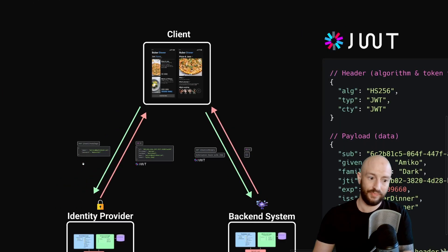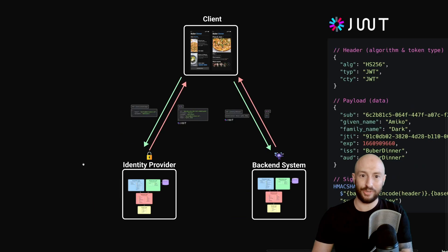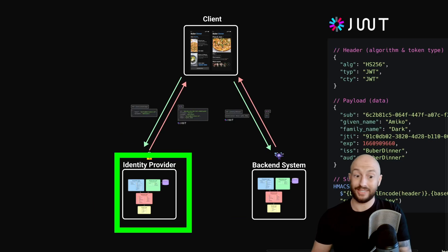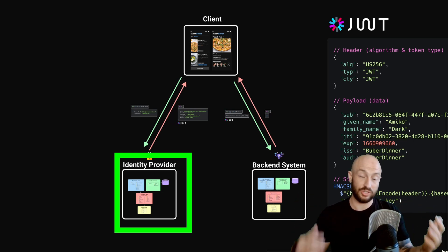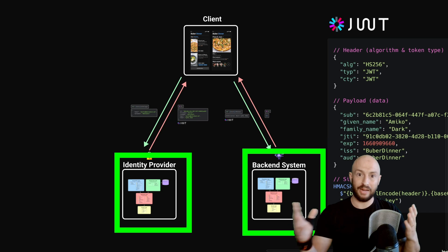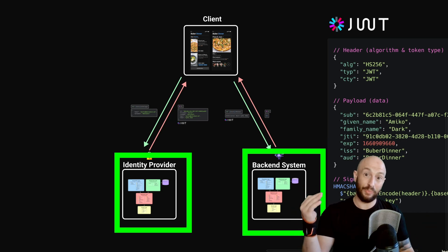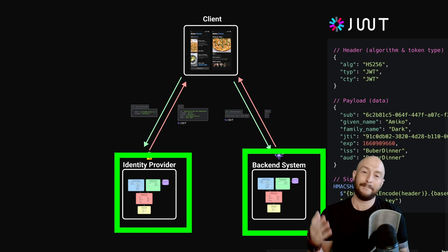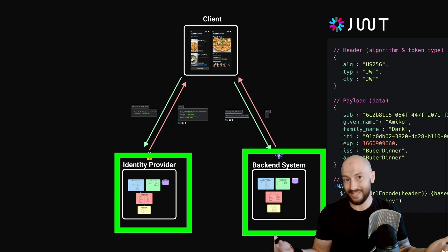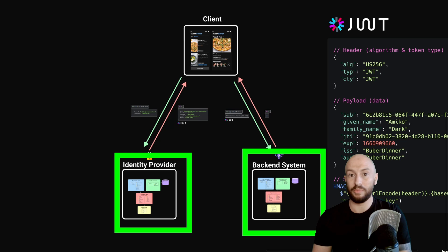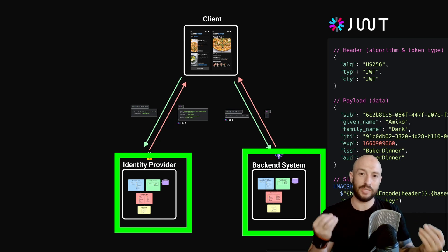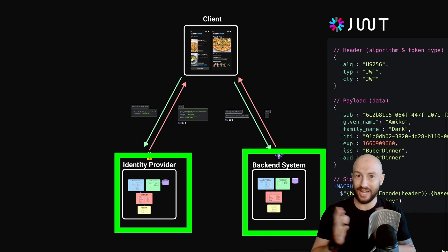What you'll usually have is two separate systems: one system that's your identity provider — for example, AAD — that generates the token, and then the backend system will have to do some back and forth to get the public key of the private key that was used to sign the token, to validate the signature. But in our case, since we're also the identity provider and also the system, we can simply use a symmetric key, and that's what we're doing in our implementation.